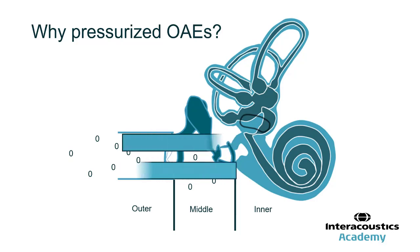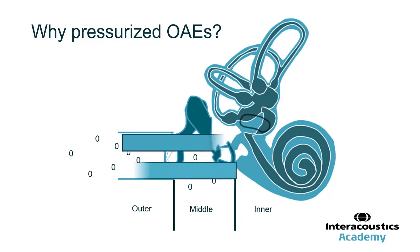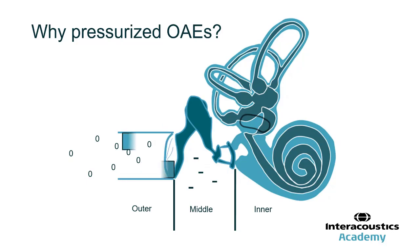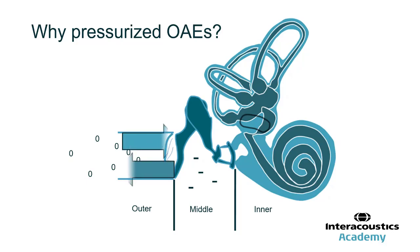When you have ambient pressure in the ear canal and ambient pressure in the middle ear, the transmission of that energy to and from those cavities is most efficient when they match. This facilitates the most efficient means of measurements that require access into the inner ear via the middle ear, which happens to be most measurements for audiology. If you have negative middle ear pressure — denoted by the minus signs in the middle ear — and maintain ambient pressure in the ear canal, there is a mismatch between the two, and sound conduction suffers.